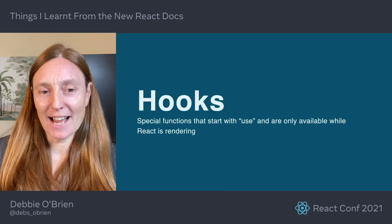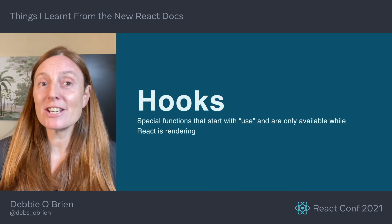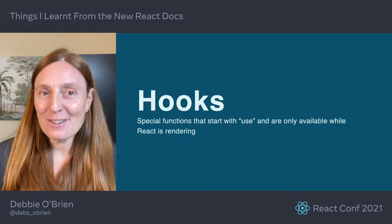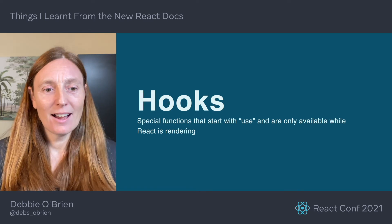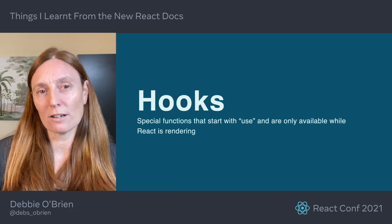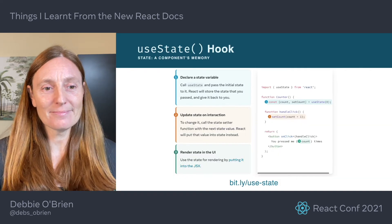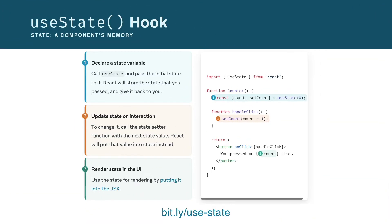When I started learning React, everyone was using hooks, but the docs didn't explain them anywhere. So what actually is a hook? What does it do? How does it work? Hooks are special functions that start with the word 'use' and are only available while React is rendering. They let you hook into different React features. The new docs contain an API section with a really helpful diagram that breaks it down into steps, which really helped me understand how the useState hook worked.